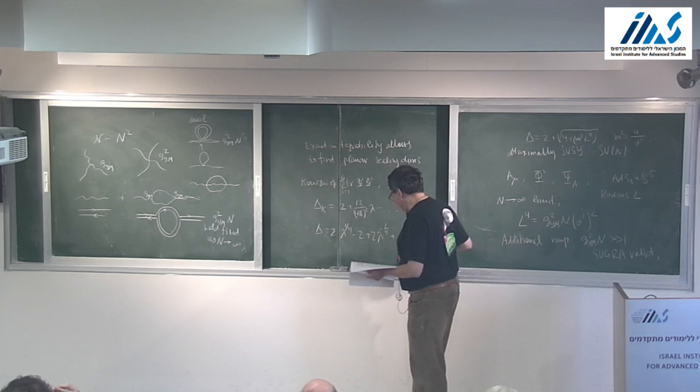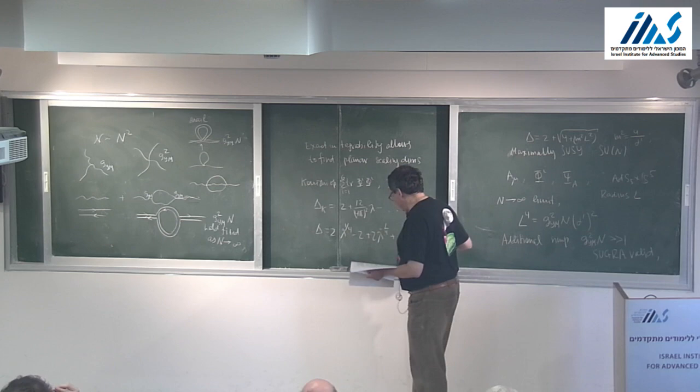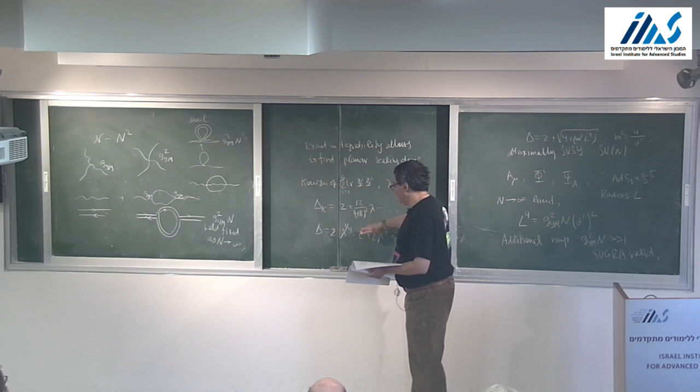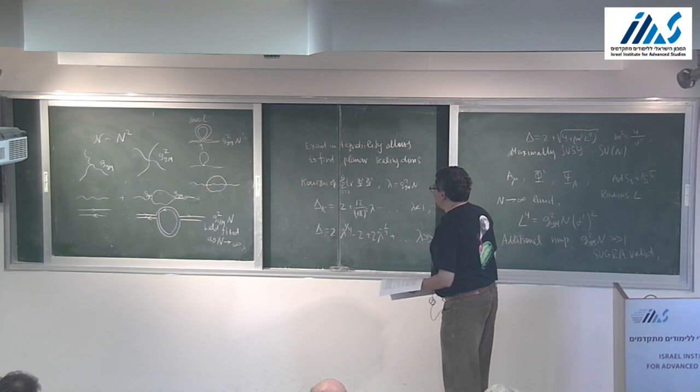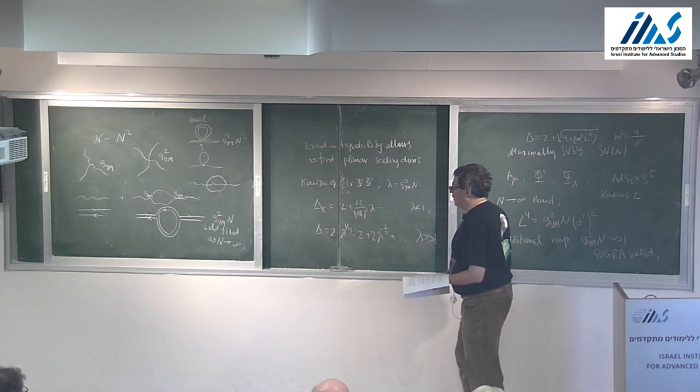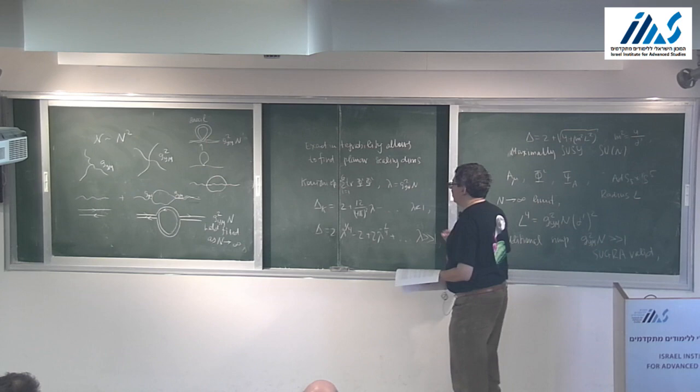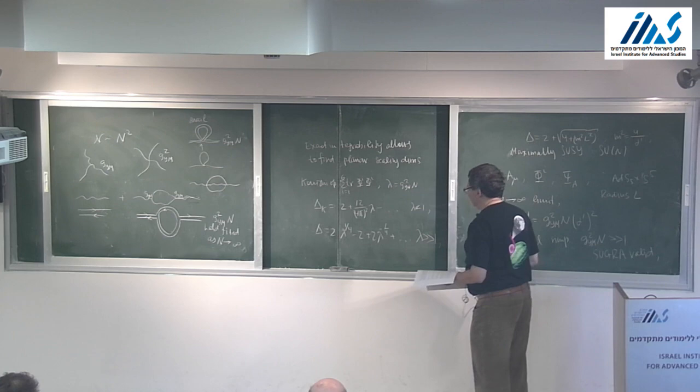Through years of painstaking work, subleading corrections were obtained, and there is a numerical solution that nicely interpolates between the two formulas. The message is: without the large-N limit we wouldn't have known about AdS/CFT, or about the integrability of planar N=4 super Yang-Mills, and many wonderful mathematical results would not be known.